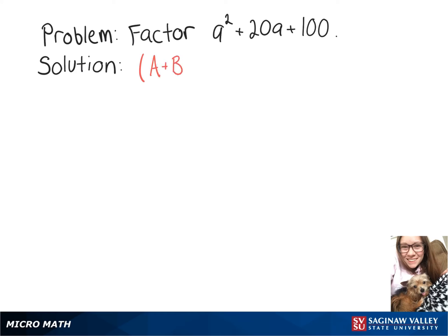we're going to keep in mind that a plus b squared equals a squared plus 2ab plus b squared.